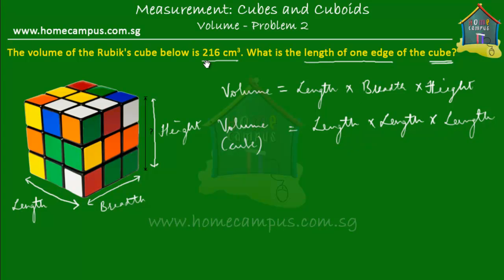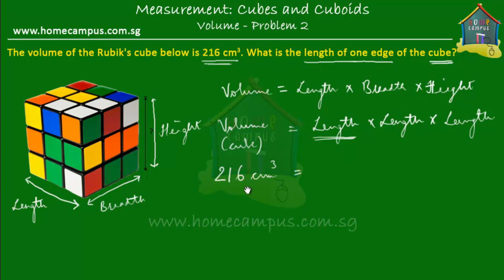Given the volume, how do we find out the length of one edge of the cube? We know that the volume of this cube is equal to 216 cubic centimeters. There are a few ways of doing this. One is to think of a number which, when multiplied by itself and multiplied by itself one more time, will give you 216.